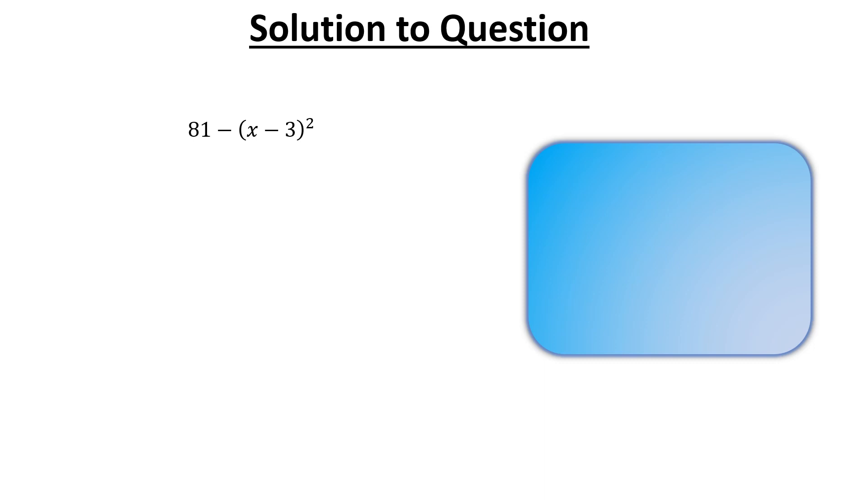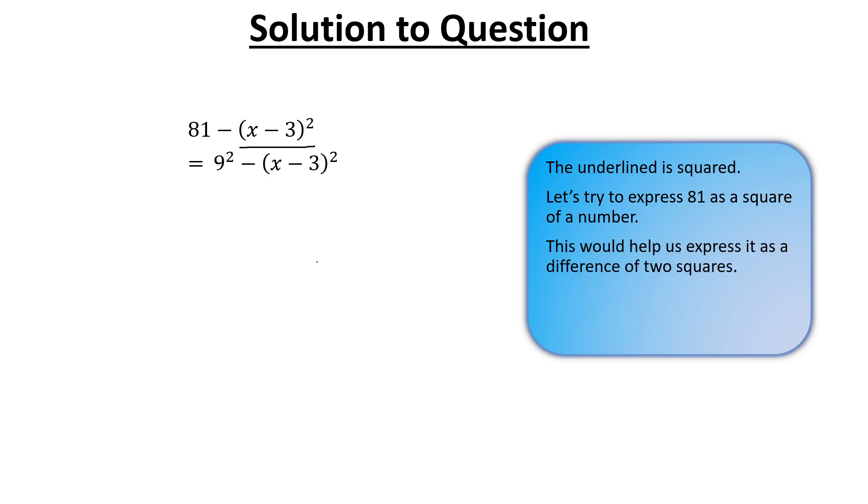So this is our expression. I'm going to underline x minus 3 is squared. Let's try to express 81 as a square of a number. What squared will give us 81? 9 squared. So 9² - (x - 3)² is the same as 81 - (x - 3)².